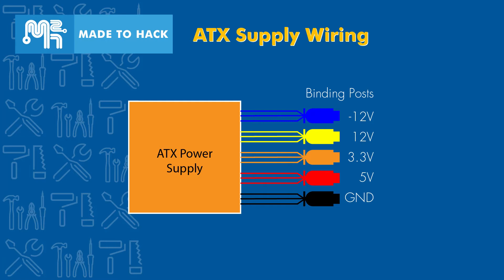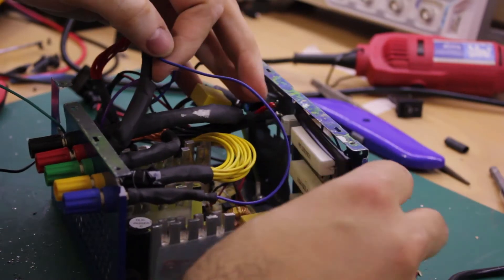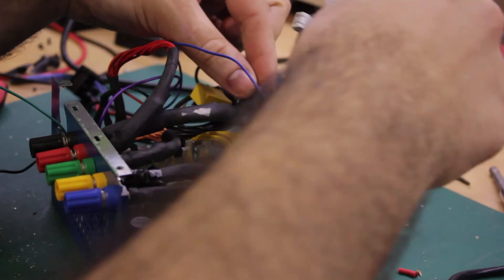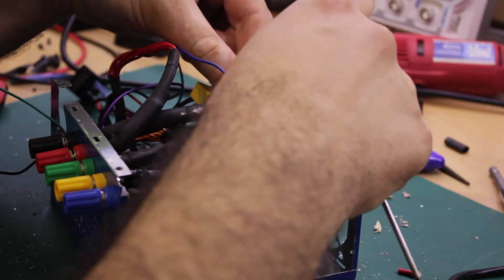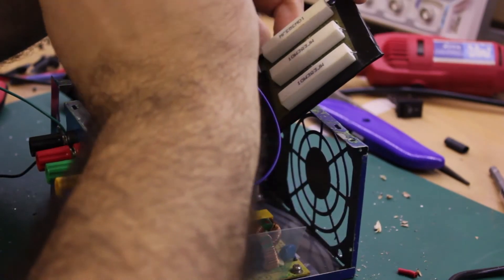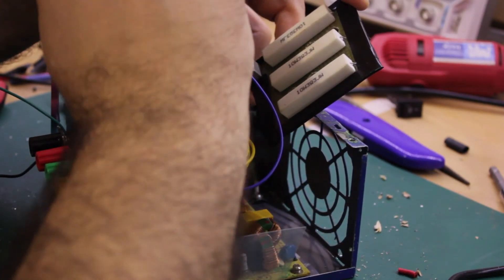You don't have to use different colored binding posts, I just find it's a quick reference to use. With the binding posts done, I connected a 10 ohm, 10 watt load resistor between positive 5 volts and ground. A modern ATX PSU will not work unless there is a load between 5 volts and ground or 12 volts and ground.